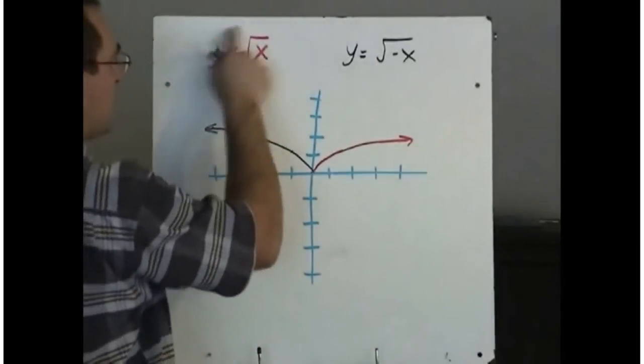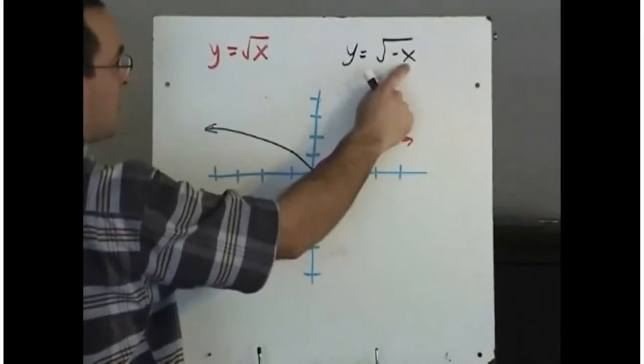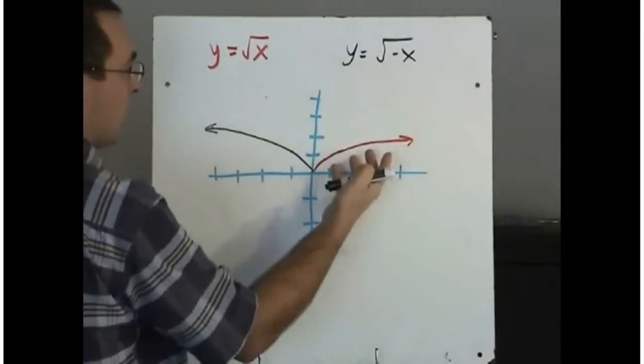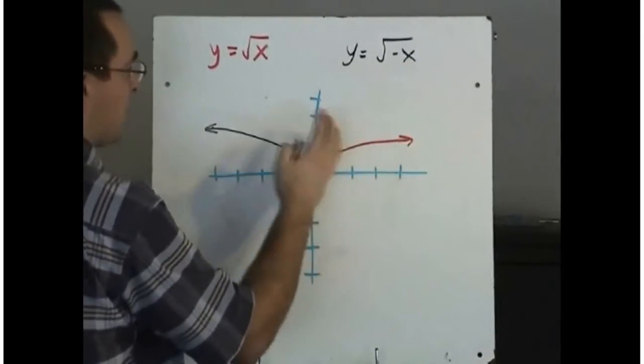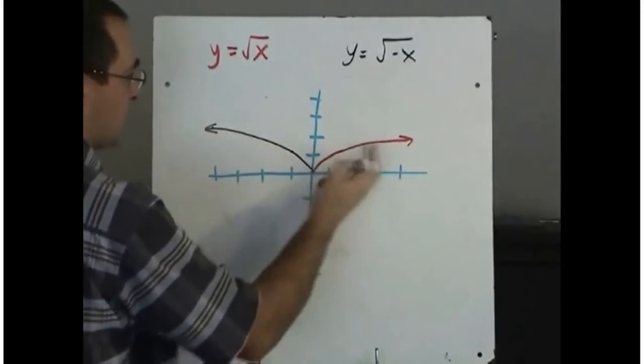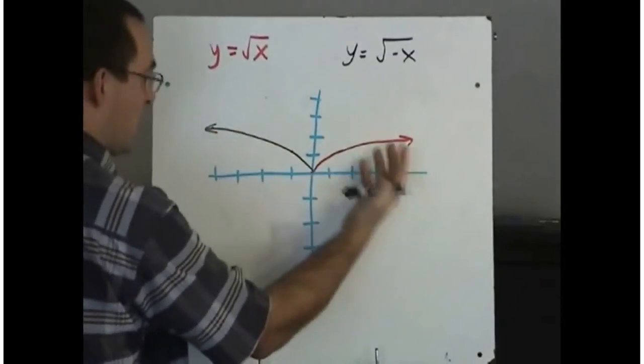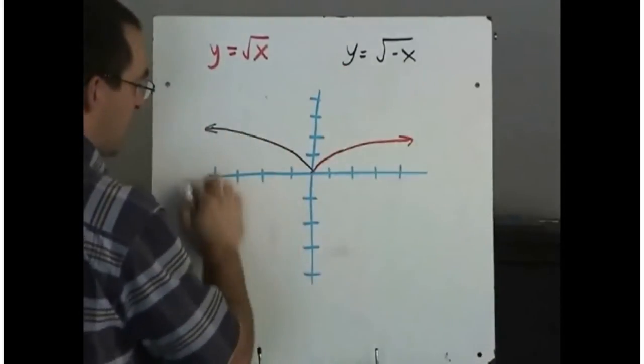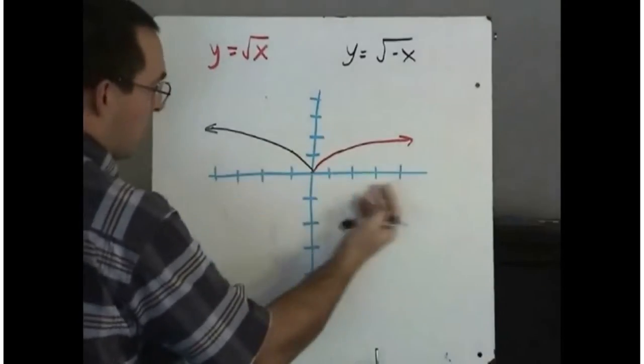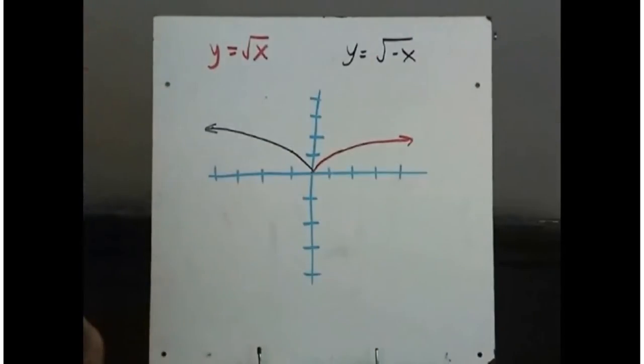So anytime you have any function and you replace the x value with a minus x, whatever picture you have will be reflected about the y axis. So if you have some graph over here, it will be reflected over to this side. And if you have a graph that's on this side, that part of the function will be reflected over to that side.